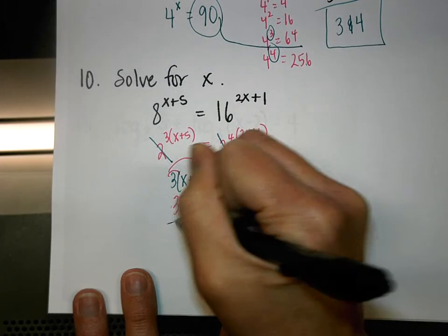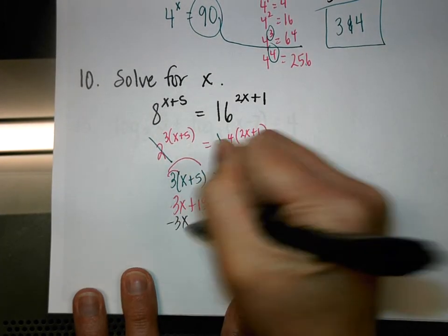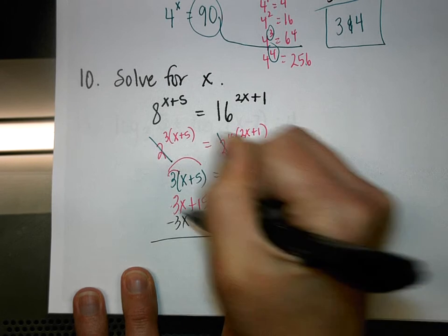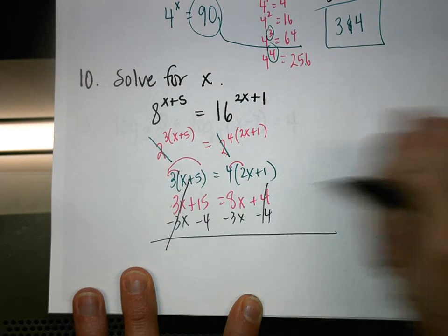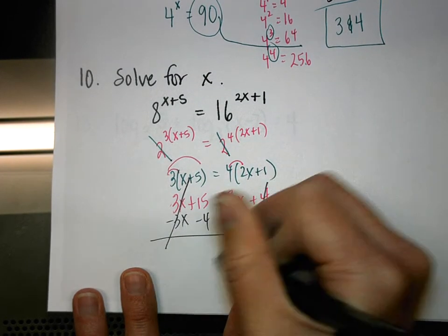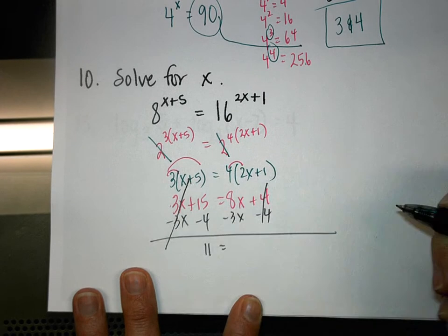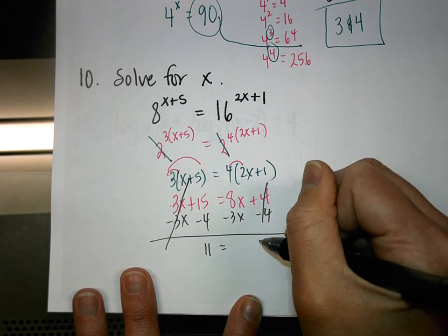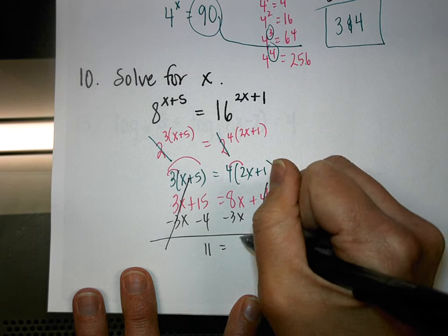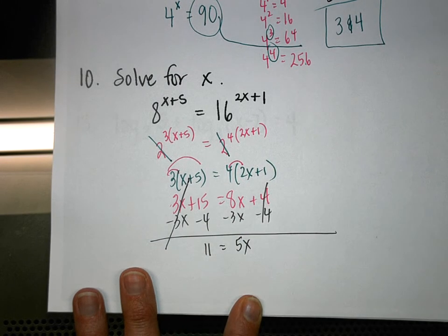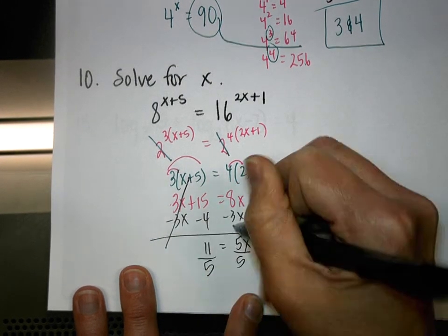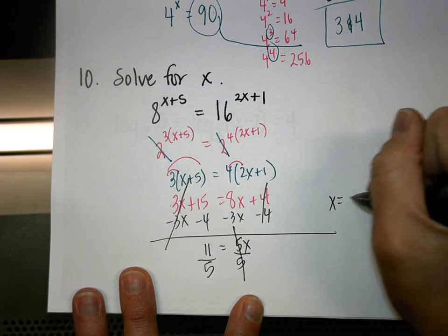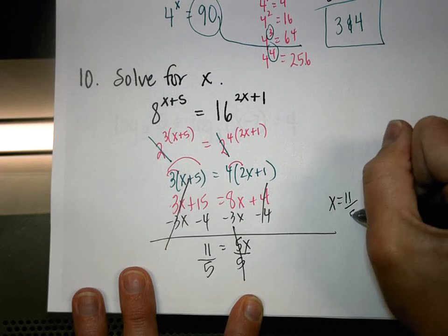Subtract 3x from both sides, then subtract 4 from both sides: 15 minus 4 is 11, and 8 minus 3 is 5x. Divide both sides by 5 and the answer is X equals 11/5.